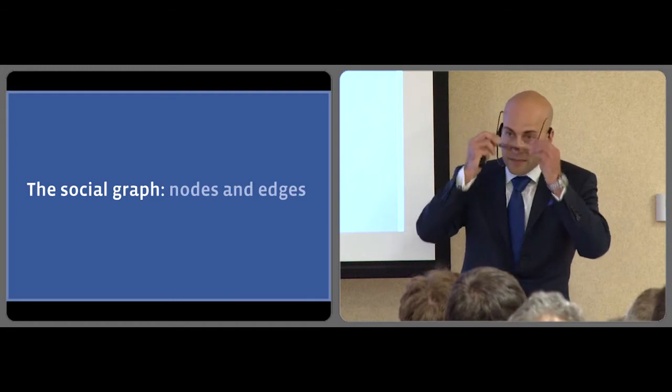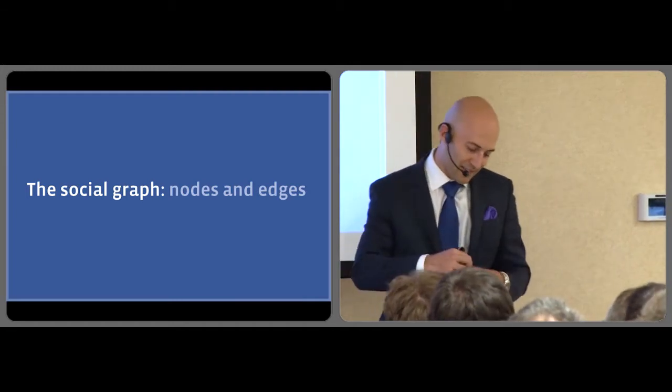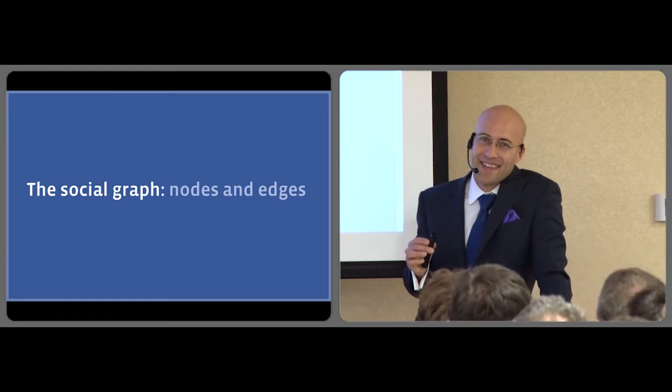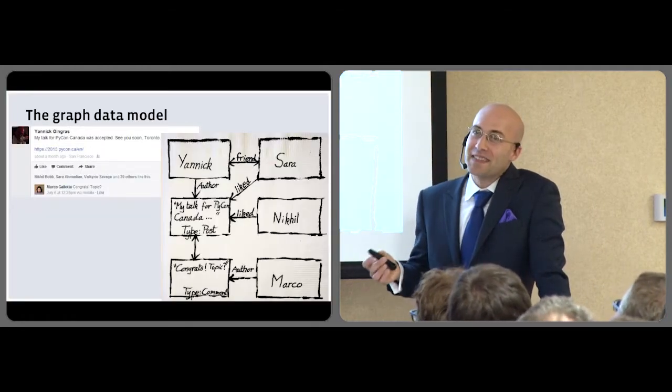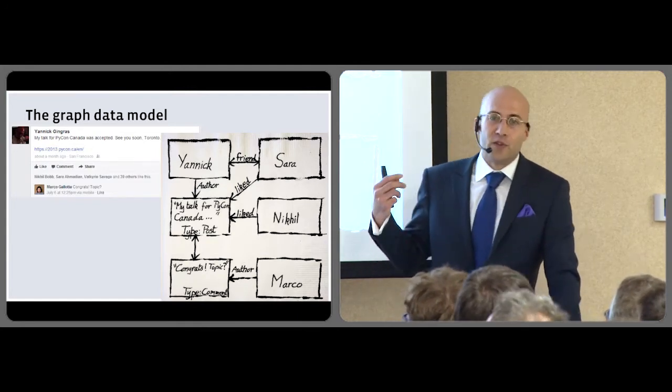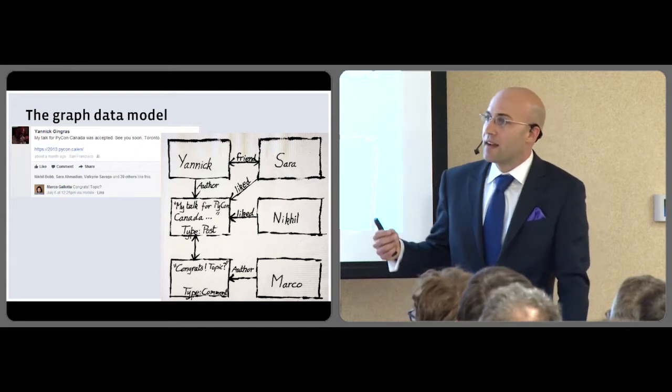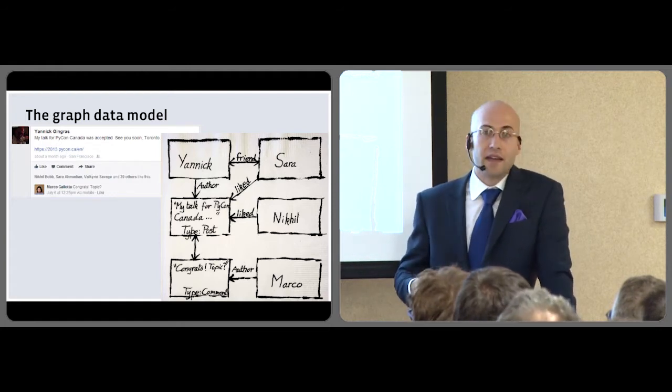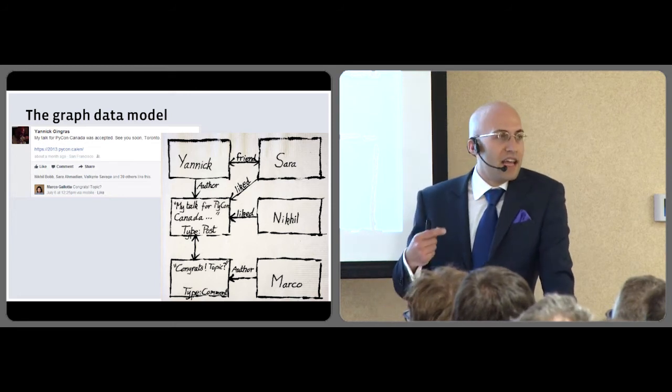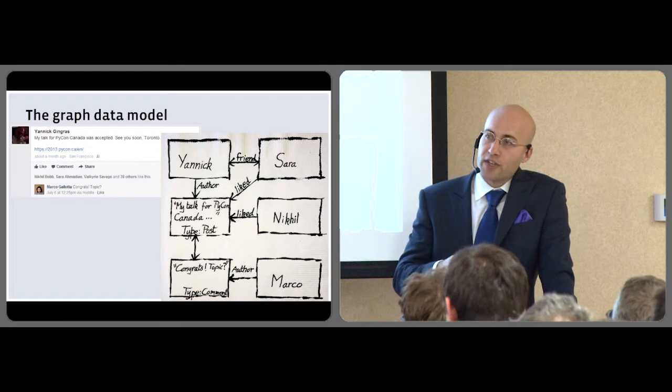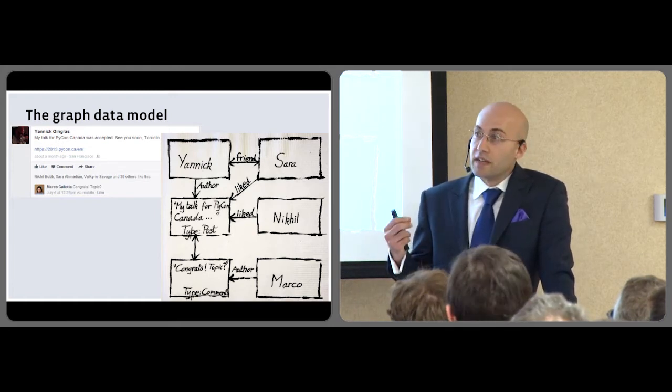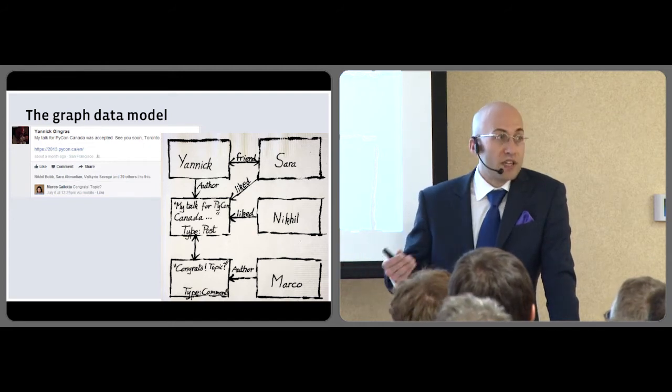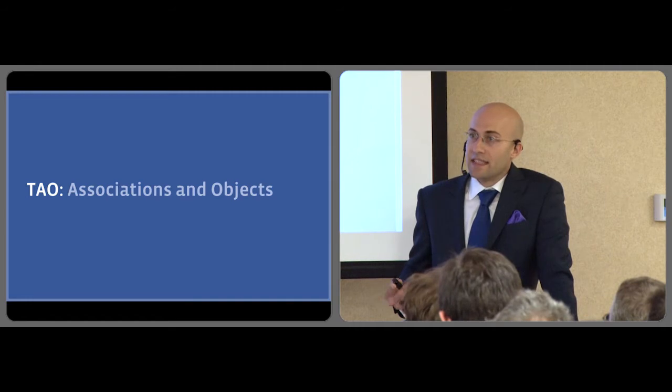Let's look at the problem from a different angle. We represent data at Facebook using graph semantics. Users and posts and comments are represented as nodes, typed nodes. And the relationships between all of these, friendship and liking, are represented as typed edges. If we are to tell our caching system about this graph semantic, then we can get the caching system to perform very powerful queries that go way beyond a simple key value lookup.